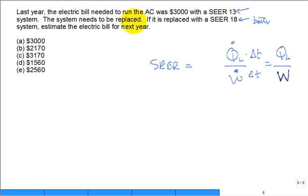Here's a problem: last year the electric bill to run your air conditioning system — only the air conditioning, not lights, stove, or hot water heater — was $3,000 for the whole summer at SEER 13. The system finally died. A salesman says he can replace it with an 18 SEER unit that will save you money. Assuming you don't change your habits — you keep the thermostat at 75°F and have an equivalent summer — what is the estimated new bill with the 18 SEER system?